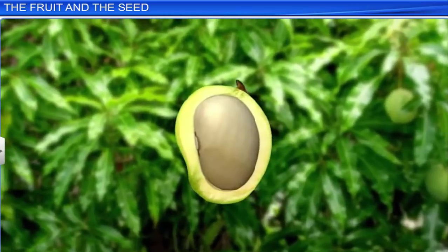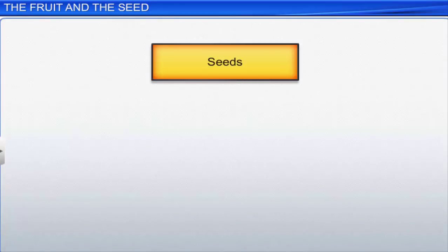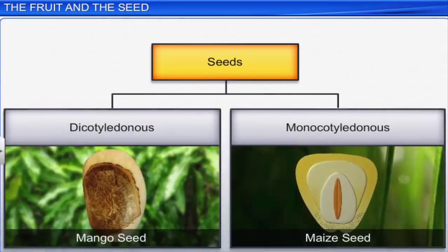Apart from the pericarp, the other part of a fruit is the seed. Based on the number of cotyledons, the seeds of flowering plants are classified as dicotyledonous and monocotyledonous.